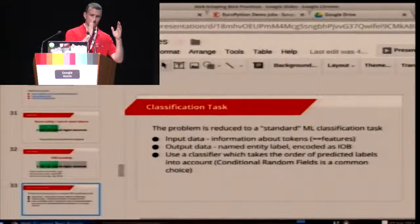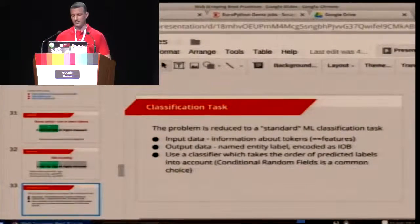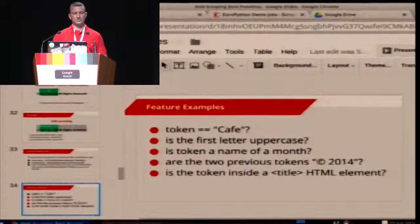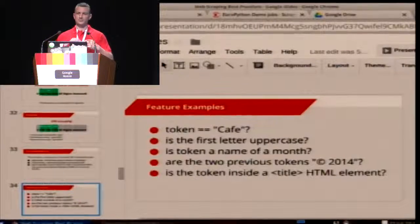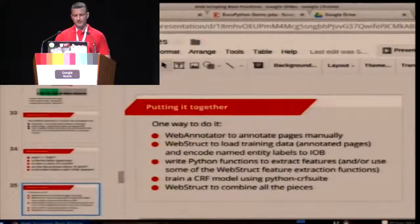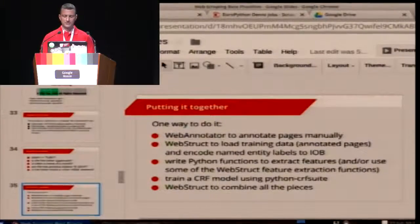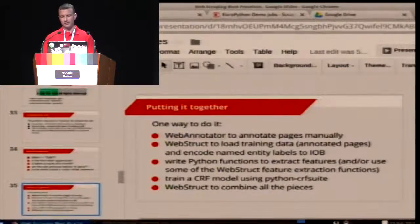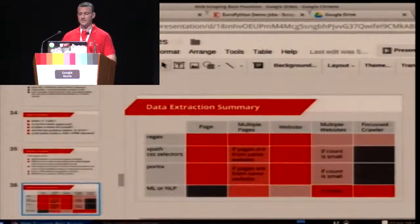We found conditional random fields work well. An important point is that the model needs to account for the sequencing of tokens. We feed it not just the tokens themselves but actual features — about the token itself and its surrounding context, including surrounding HTML elements. This can be quite powerful. The WebStruct project helps load annotations done in WebAnnotator, calls back to your Python modules for feature extraction, and interfaces with something like python-crfsuite to actually perform the extraction.